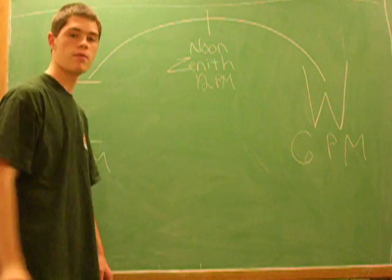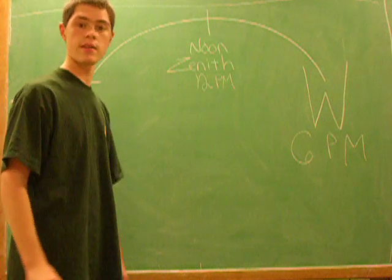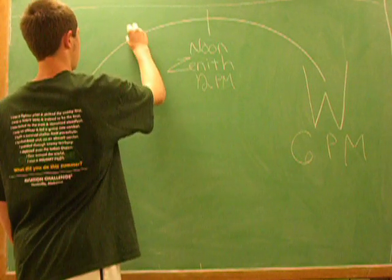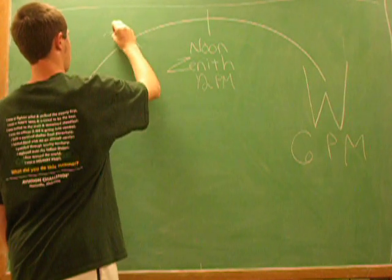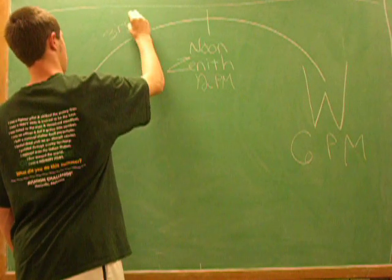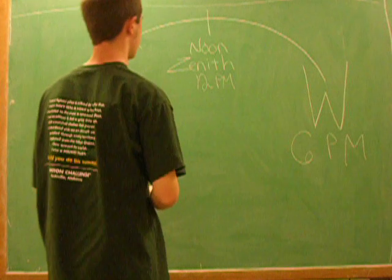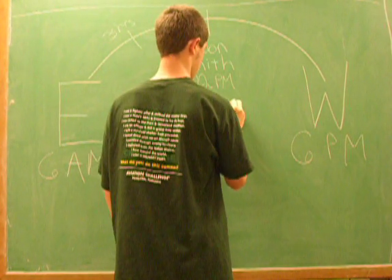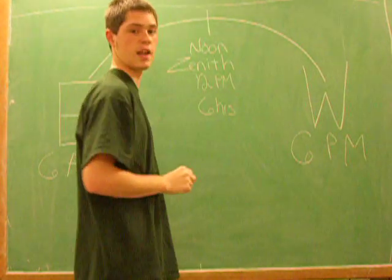Okay, so how do we get to 12? Well, there's increments of 3 hours. 6, 7, 8, 9, 10, 11, 12.